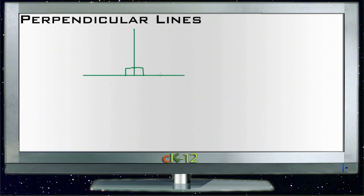If lines are perpendicular, the rules are similar. If you have one line, call this one N here. If we know that line N is perpendicular to line P, so P here and N there.